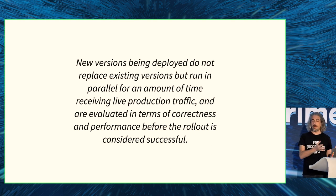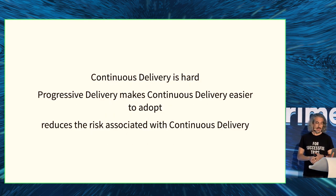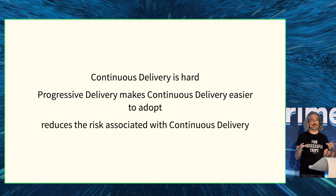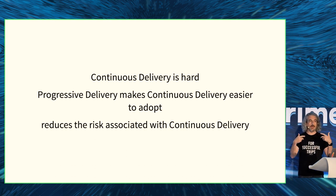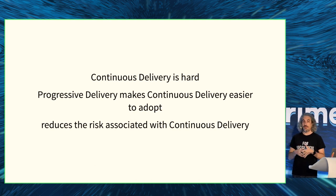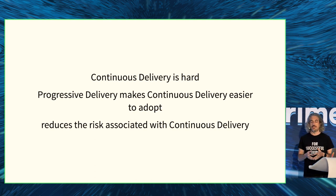You also have the ability to do automatic rollbacks if you figure out that the new version is bad. Continuous delivery is hard, and progressive delivery makes it a lot easier to achieve the speed you're trying to get. It also reduces risk. A lot of times I hear people saying, 'I commit something to master, it goes to production directly — what if I break all my users?' Progressive delivery is trying to fix that.